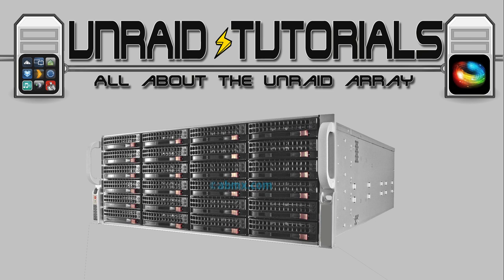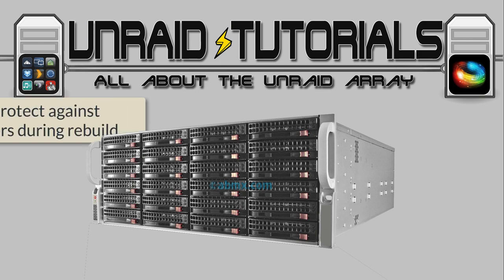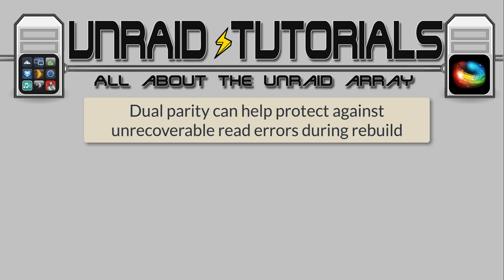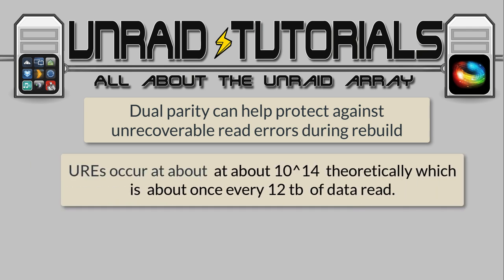One critical time a drive can fail is during the rebuild process, so dual parity protects against this. Dual parity has another advantage when it comes to rebuilds: encountering an unrecoverable read error, or URE. This type of error happens when reading data. On modern SATA disks, about once every 12 terabytes of data read, one of these errors can theoretically occur. With disks getting larger and up to 8 terabytes becoming more common, this is becoming more likely to happen during a rebuild.